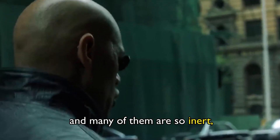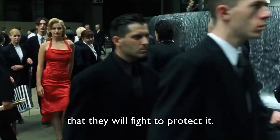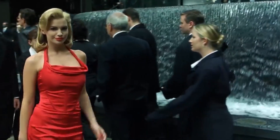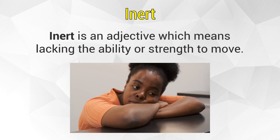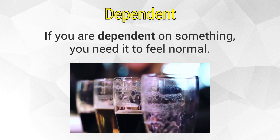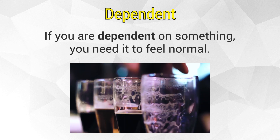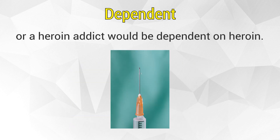And many of them are so inert, so hopelessly dependent on the system, that they will fight to protect it. 'Inert' is an adjective which means lacking the ability or strength to move. 'Hopelessly' is another way to say 'extremely' or 'in a way that makes you lose hope'. If you are 'dependent' on something, you need it to feel normal — like how an alcoholic is dependent on alcohol, or a heroin addict would be dependent on heroin.